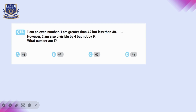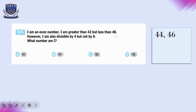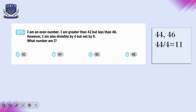Question number fifteen: I am an even number, greater than 42 but less than 48, divisible by four but not by nine. The even numbers between 42 and 48 are 44 and 46. Dividing 44 by 4 gives 11, and 44 is not divisible by 9. But 46 is not divisible by 4. So the answer is 44, option B.